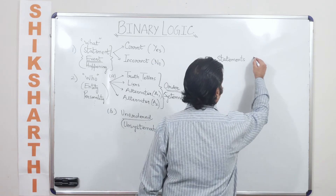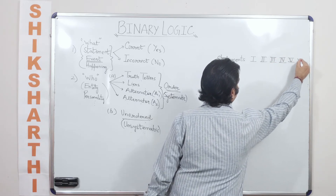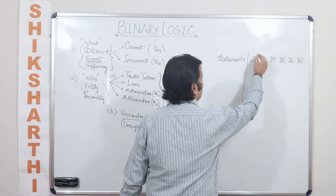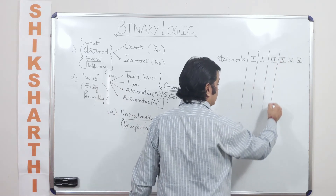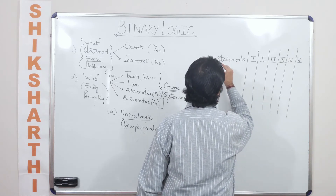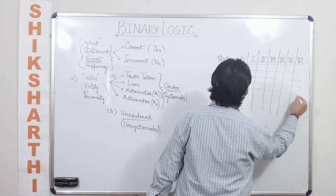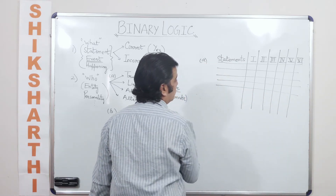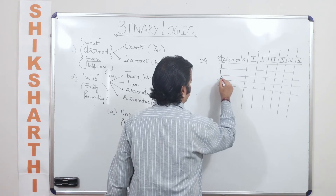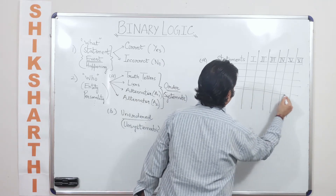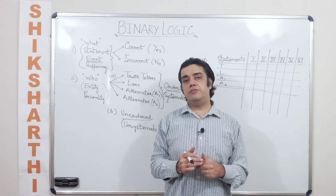Let's say various statements are made — one, two, three, four, five, six and so on. If I draw a chart to capture the responses of these types of personalities, we are talking about a systematic response — an ordered pair. We are first talking about truth tellers (T), then liars (L), then alternator of first variety and alternators of second variety.